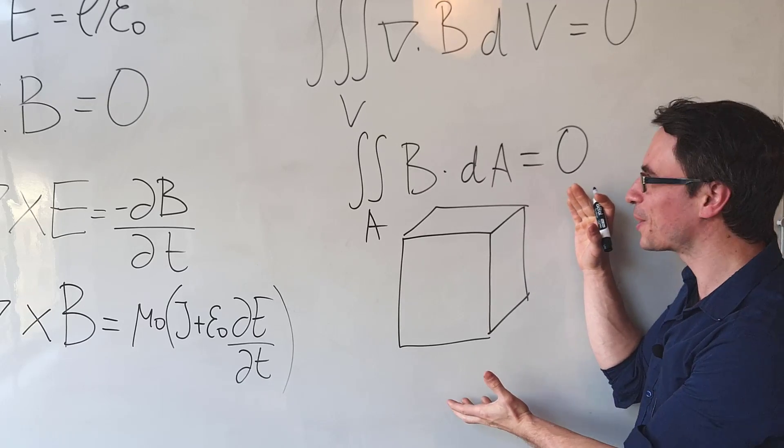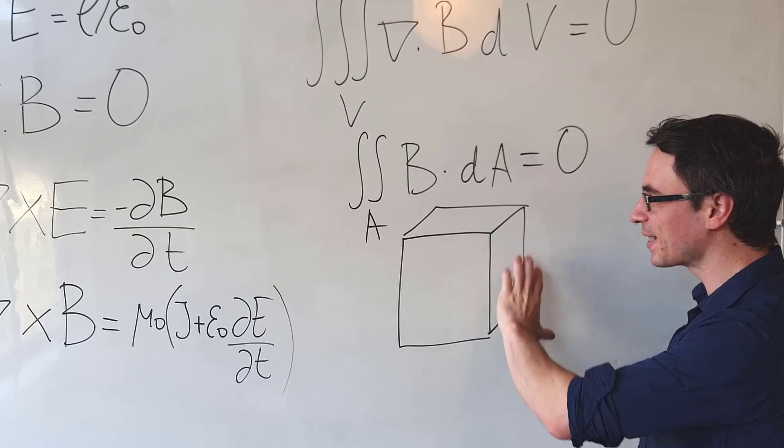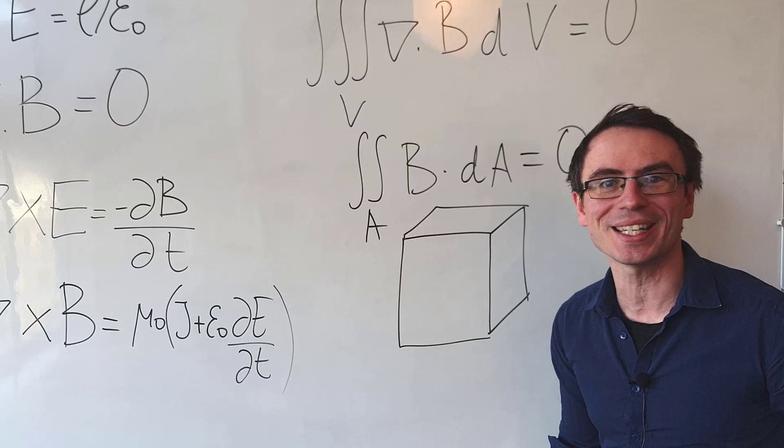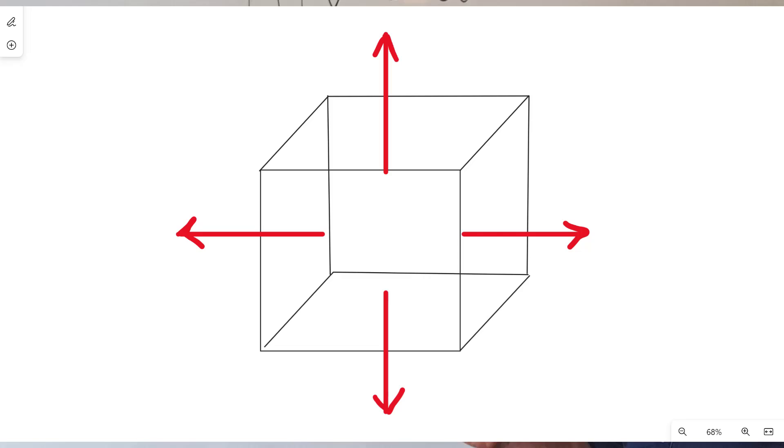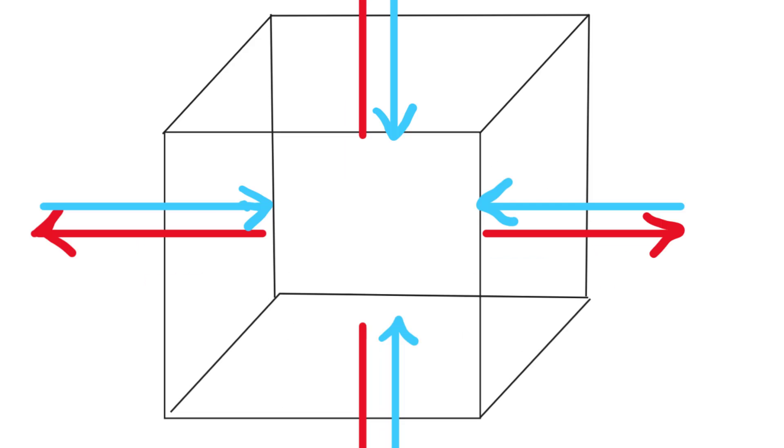What is the physical interpretation of this equation? One interpretation would be that if we had a closed area, there are no particles on the inside. Another interpretation would be that there are as many field lines coming out as there are field lines going in.